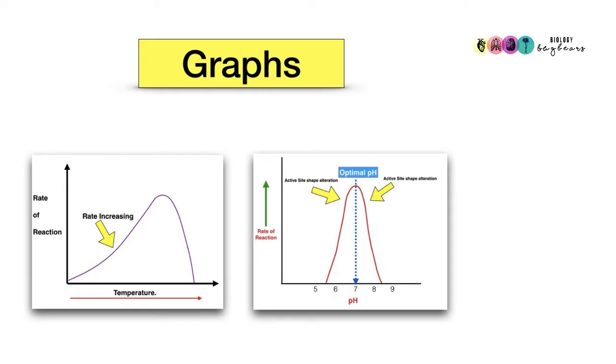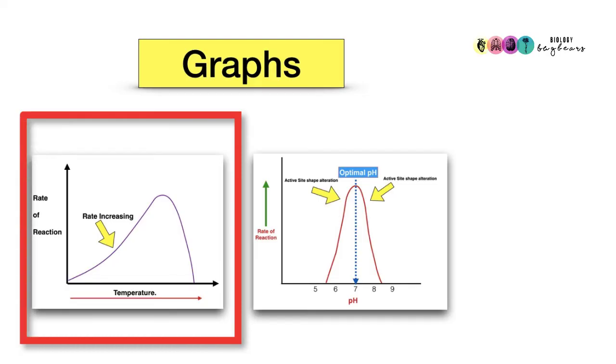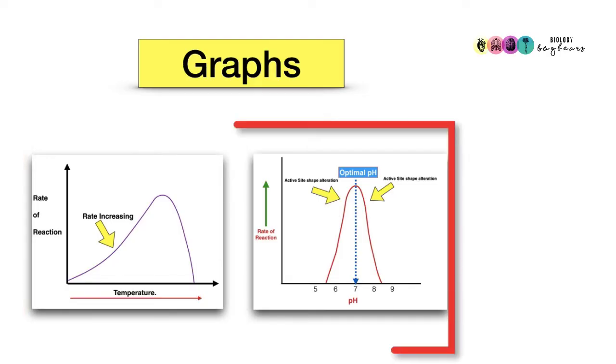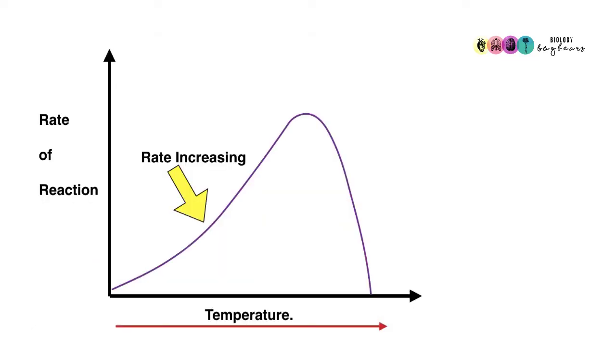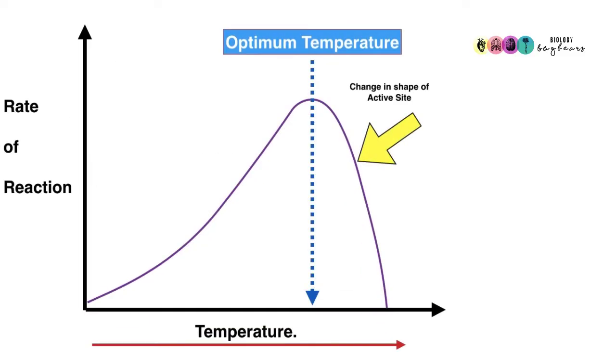There are two important graphs connected with enzyme practicals. One is examining the effect of temperature on enzyme activity and the other is examining the effect of pH on enzyme activity. You need to be really familiar with the shape of these graphs. It seems to be a continual problem where students are mixing up temperature and pH. This graph is showing how increasing temperature is affecting the rate of a particular enzyme-controlled reaction. It gradually increases steadily until the optimum temperature is achieved or reached, and then it declines rapidly.